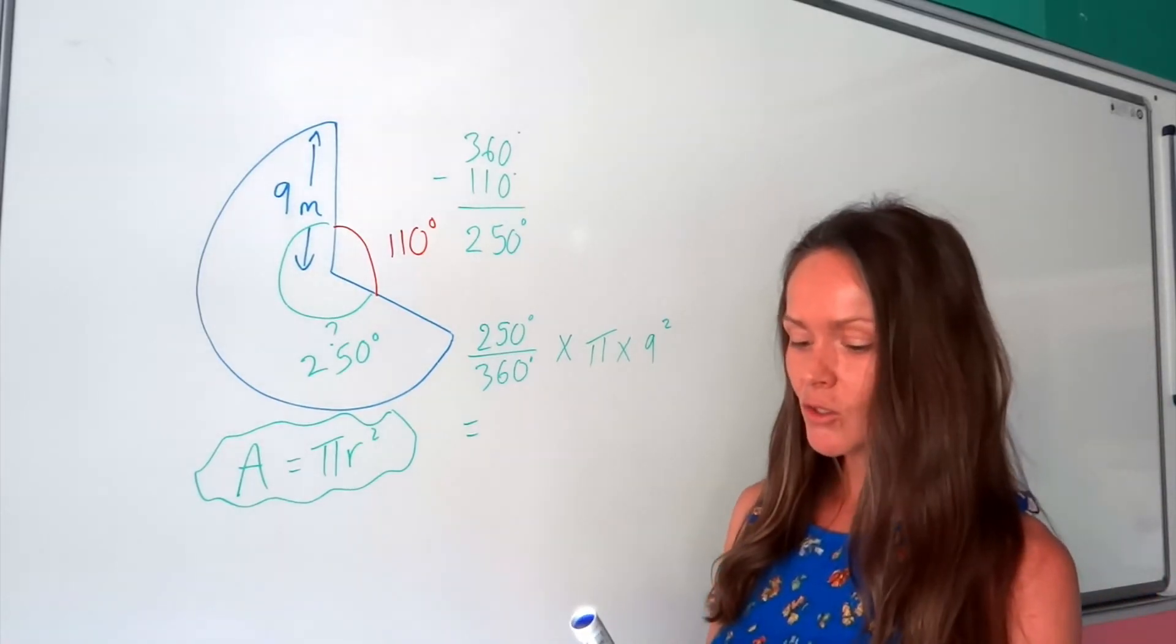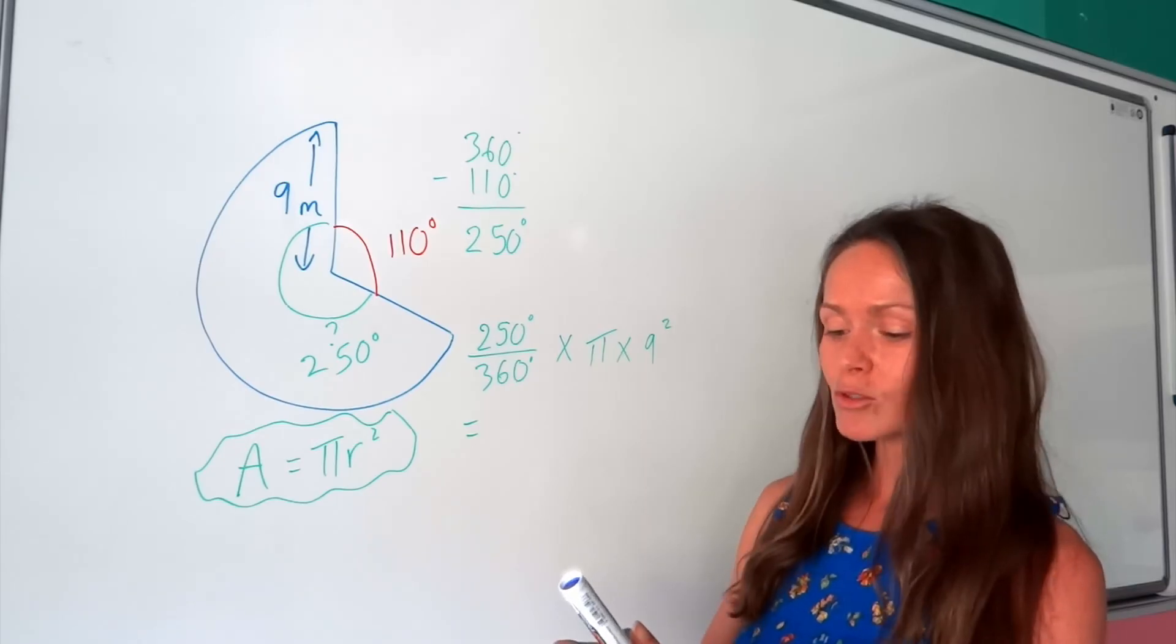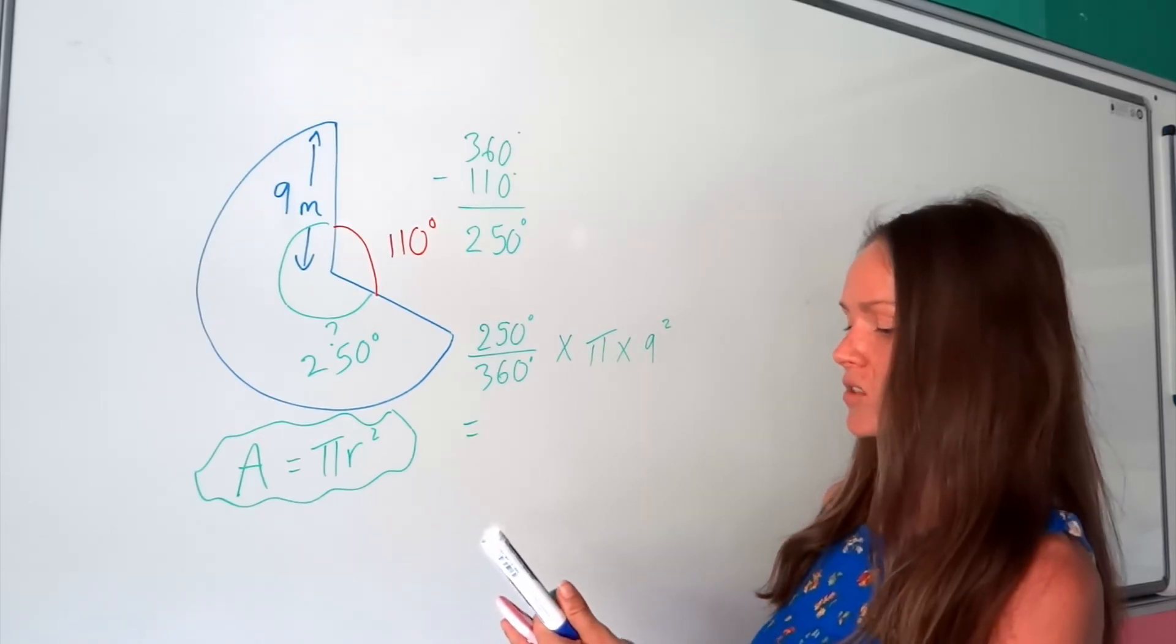So next, just put that in the calculator. So you've got a fraction, 250 over 360, multiplied by pi, multiplied by 9 squared.